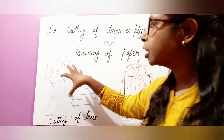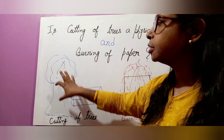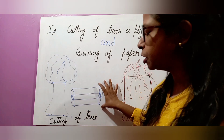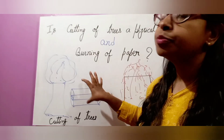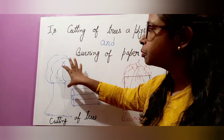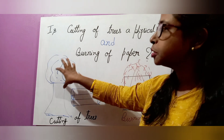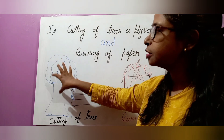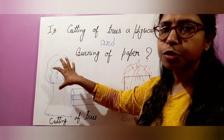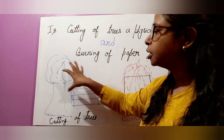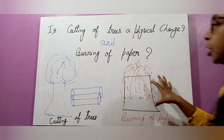So this cutting of a tree — here you are watching the figure, this is a tree. When we cut it down, it converts into a log. But the composition of the constituent particles of the tree never changes. That means the substances present in the tree, like starch or chlorophyll, whatever is present in the tree, never change.